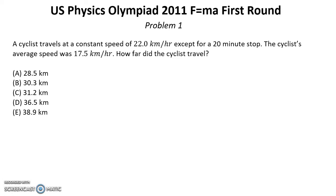Hello everybody! Today we will start to discuss problems from US Physics Olympiad year 2011 first round F equal M A. They were given as usual 25 problems for 75 minutes. For solutions for all problems you can check the reference under this video.